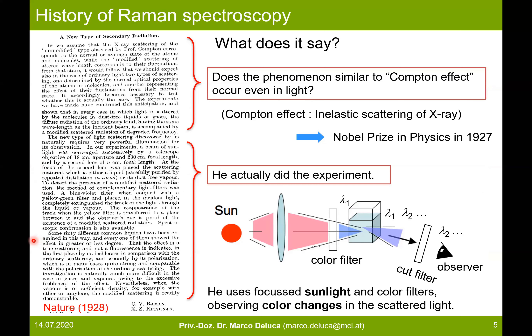The idea was to understand whether a phenomenon similar to the Compton effect — the inelastic scattering of X-rays — also occurs in other electromagnetic radiation, such as light. He used sunlight as a light source, focused it into a liquid through a color filter so that only one specific wavelength passed. He then observed the light coming out of the sample using a filter that cut only the lambda-1 radiation, and found that light was still passing through — meaning the scattered light had a different wavelength. This light was very feeble and also polarized, confirming it was a scattering effect, not photoluminescence.